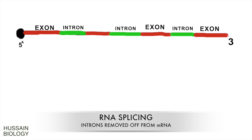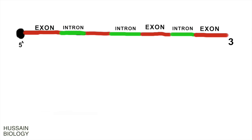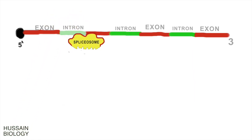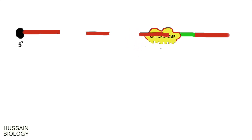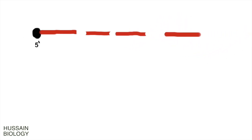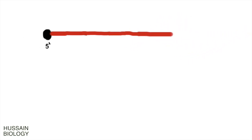Introns are removed by enzymatic action of complex proteins in the form of spliceosomes. As seen in the animation, the spliceosome acts on the pre-mRNA molecule and removes the introns. Ultimately we get the final product in the form of a mature mRNA molecule containing exons only.